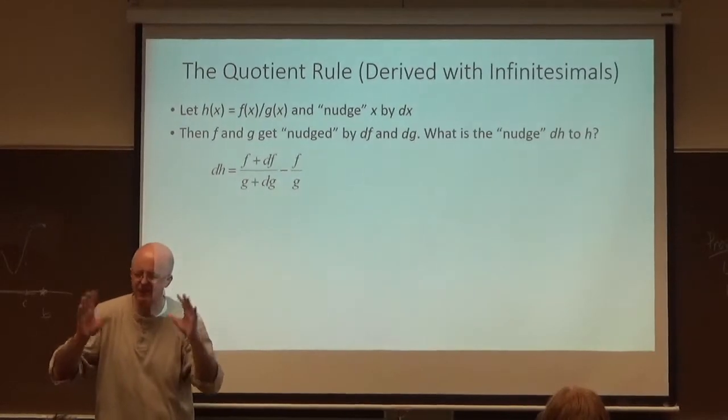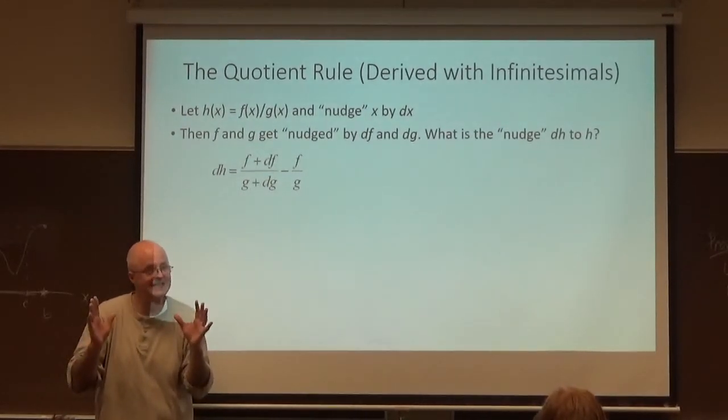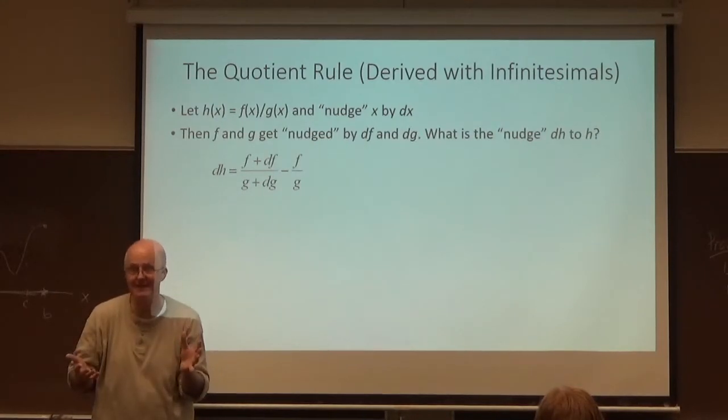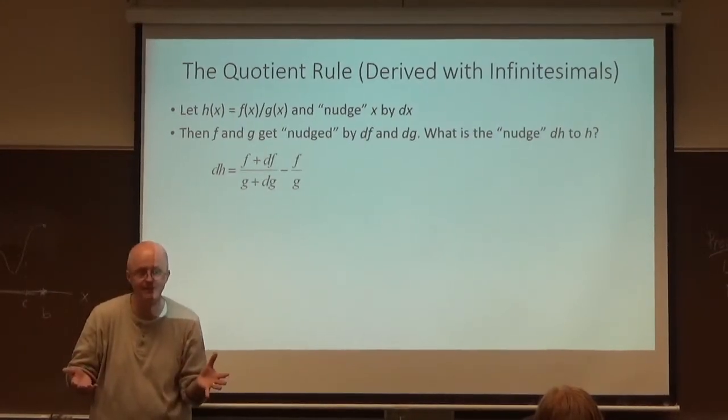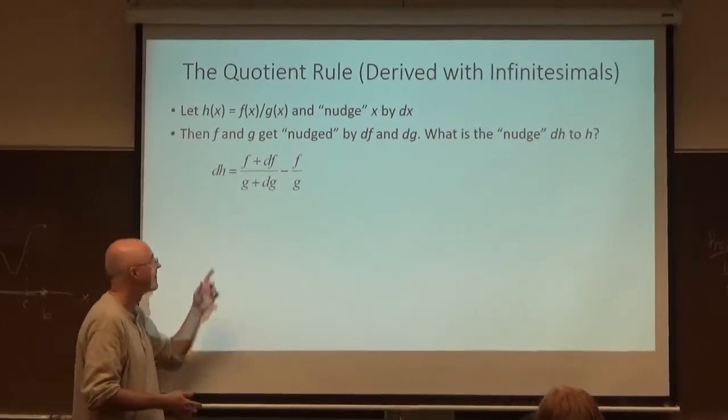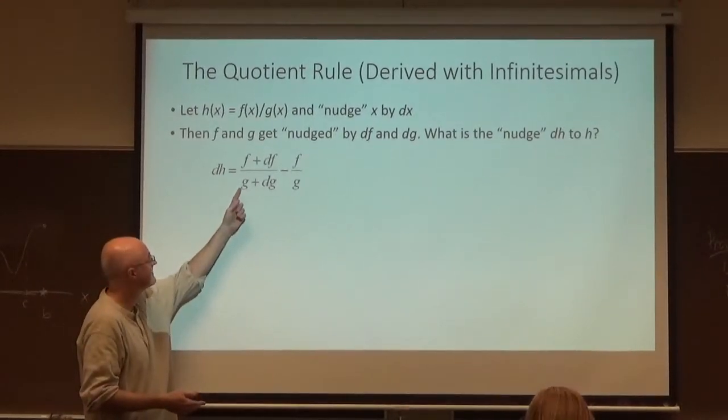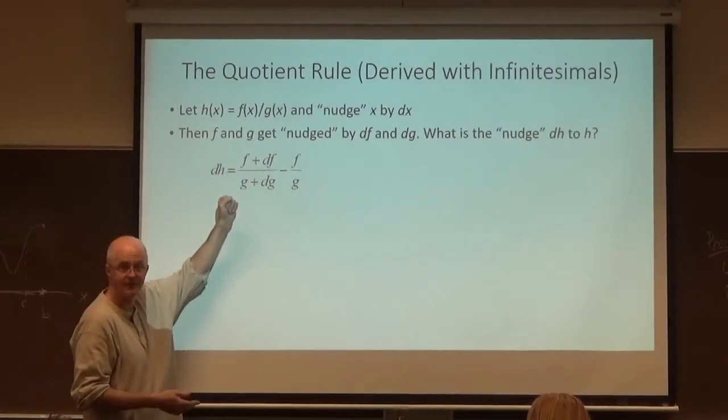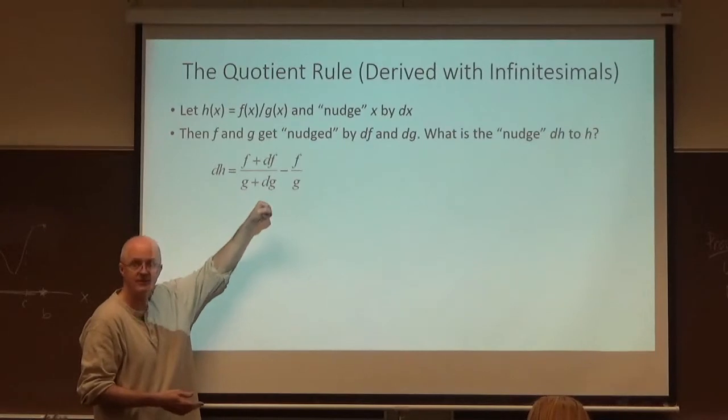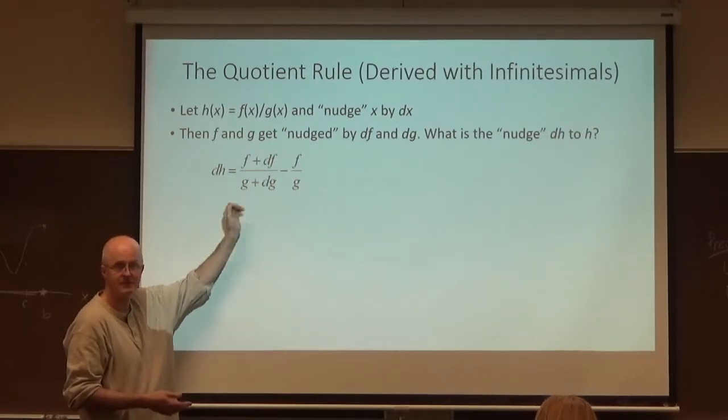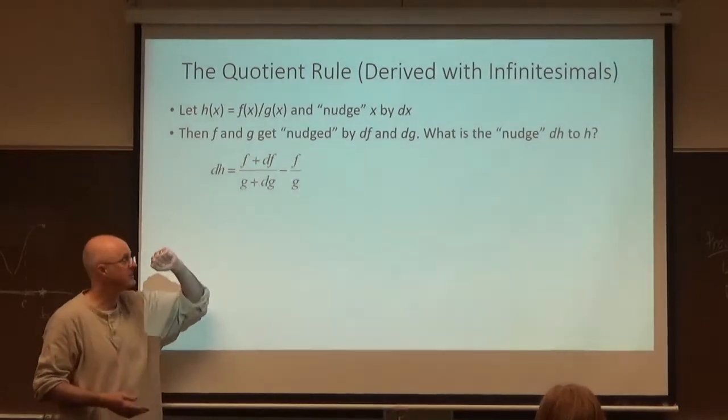Again, you've got to keep in mind, even though you don't see any x's in there, that x is in the picture. It's just in the background. I'm not bothering to write it because it makes it more confusing. It makes it more messy. dh is its value of the ratio of the nudge values of f and g minus the original values of f and g as quotient. Just the difference of two function outlets for h.